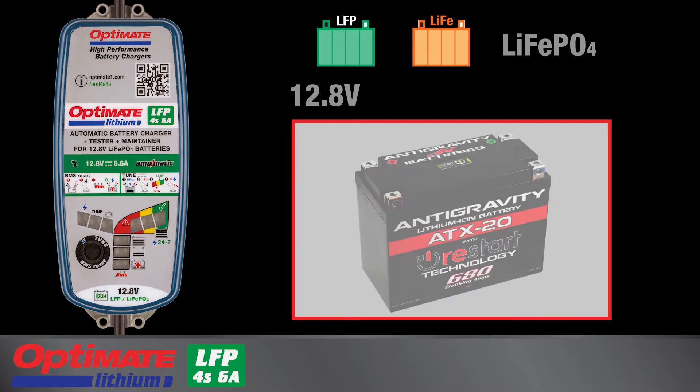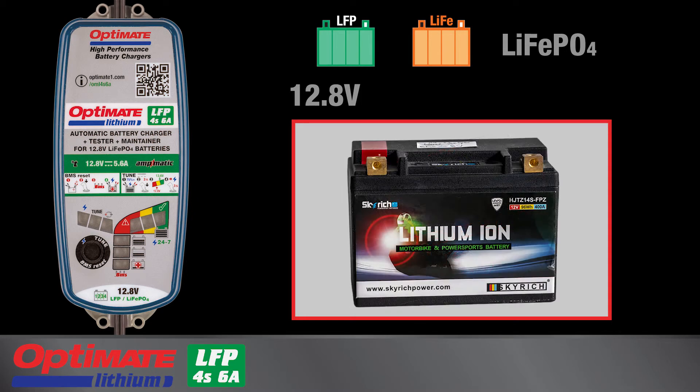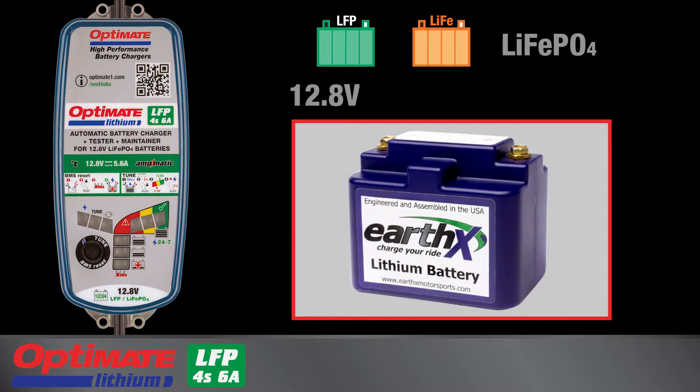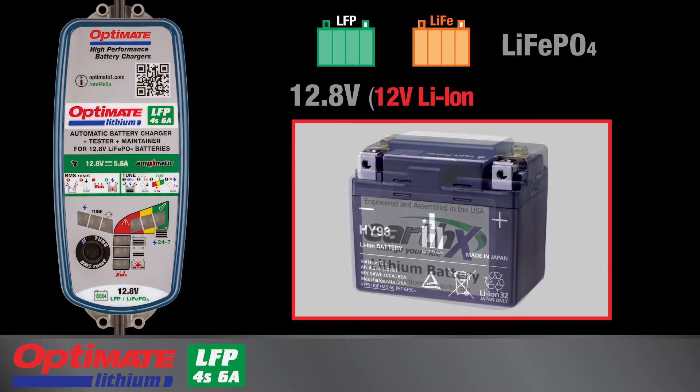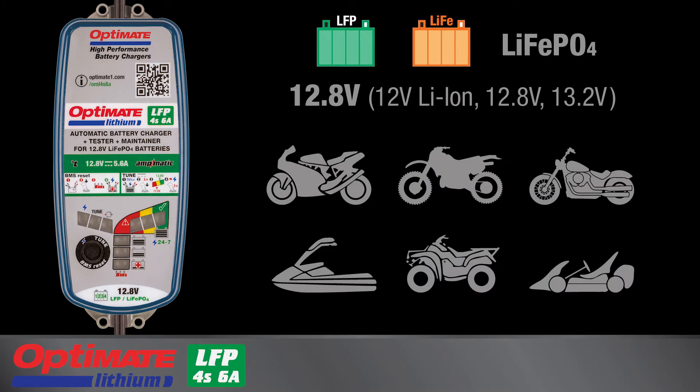Some battery manufacturers display different voltage ratings and may only display the basic battery chemistry such as lithium ion. Whether the battery is marked 12 volt lithium ion, 12.8 volt or 13.2 volt, if the battery is used in a 12 volt vehicle system, it can be charged safely with this Optimate lithium battery charger.